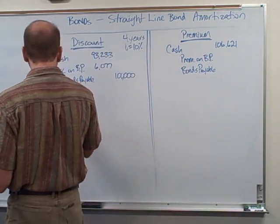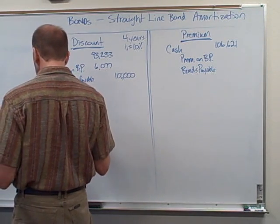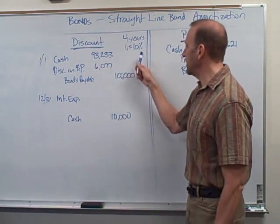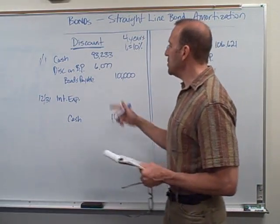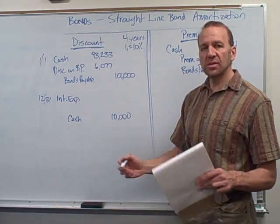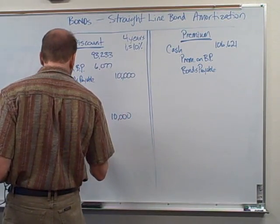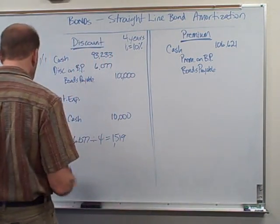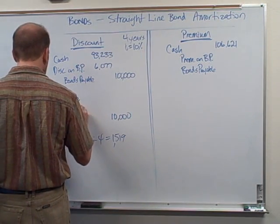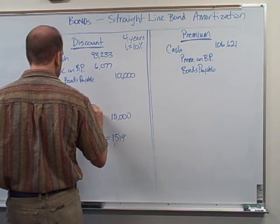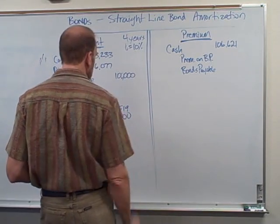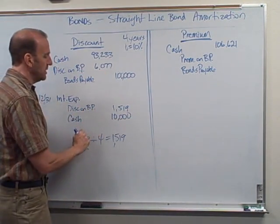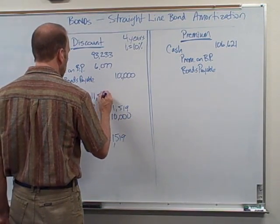So what we have here is interest expense. I'm going to leave a space here and have cash. Cash is going to be paid out at ten thousand dollars, because these bonds are earning ten percent of the hundred thousand, which is ten thousand dollars cash. Now we've got to use up this discount on the bond payable over the four years. So I take the six thousand seventy seven divided by four, which gets us fifteen nineteen per year. Our discount on the bond payable is going to be used up each year at fifteen nineteen, so our interest expense each year will be eleven thousand five hundred and nineteen.